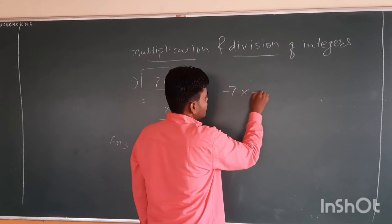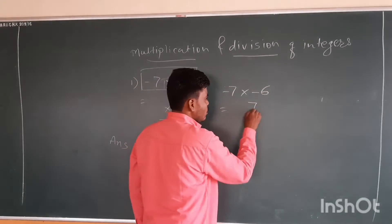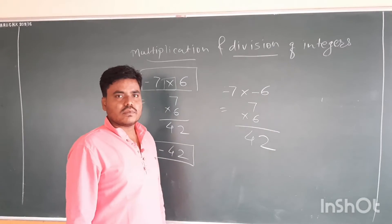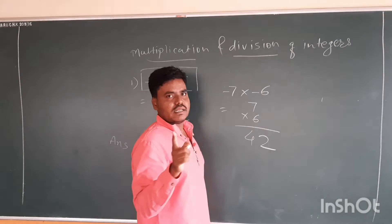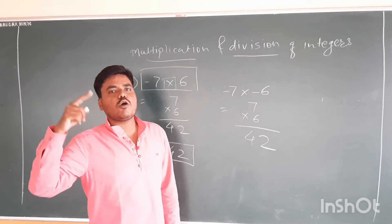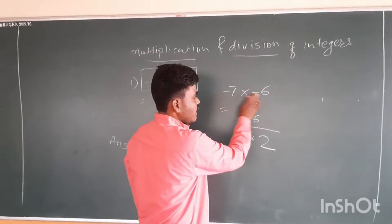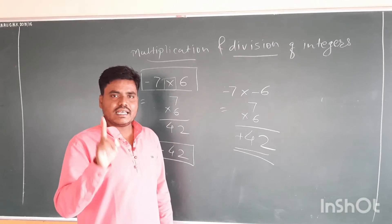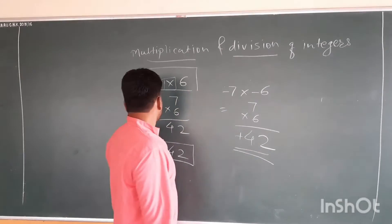In multiplication, we are going to do 7 times 6 equals 42, but there is a minus sign to both the numbers. Hence we are going to write the opposite of minus. Minus times minus equals plus. Plus, the answer is plus. This is the rule. Next example.